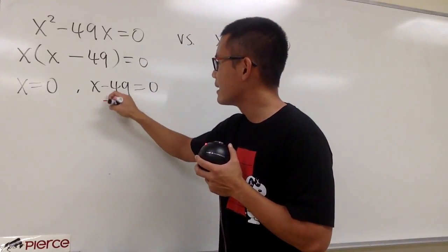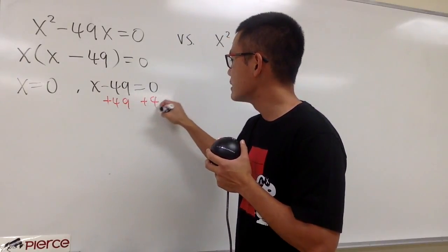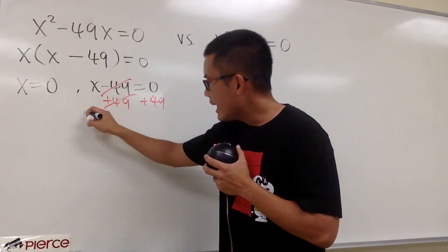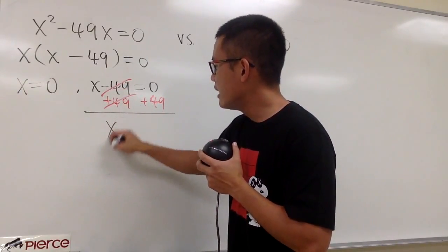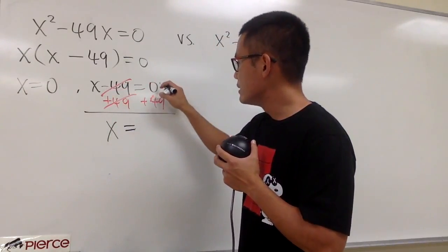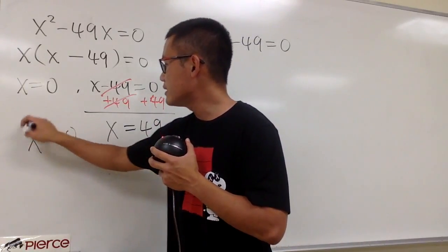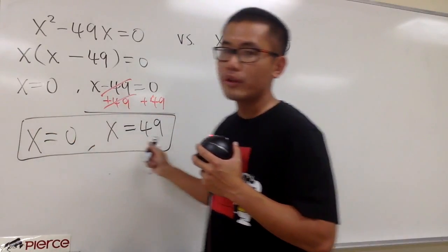To do that, let's add 49 on both sides. So that, you see, this and that will cancel. And we will have the second answer, x is equal to 0 plus 49. That will be just 49. So, here are the two answers, 0 and 49.